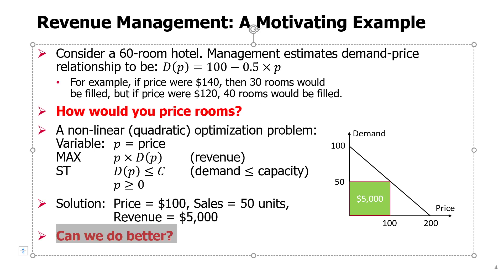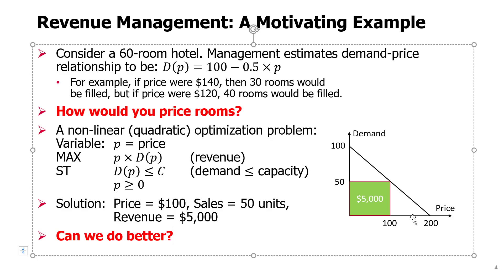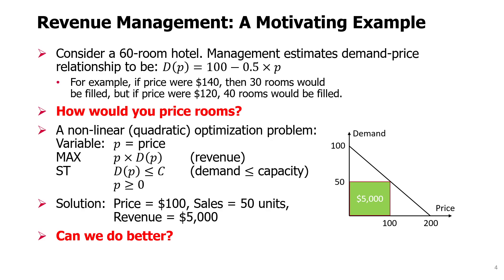Can we do better than this? Consider that among those 50 people paying $100, some were willing to pay a higher price. For example, 20 people were willing to pay $160 — plugging $160 into the demand function gives demand of 20, and those 20 are the same people now paying only $100. If we could make people willing to pay a higher price actually pay that higher price, while selling to others at a lower price and better utilizing the 60-room capacity, we could increase our revenue.